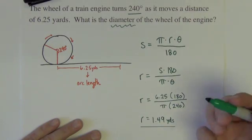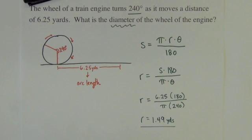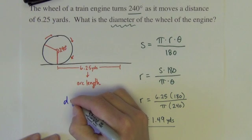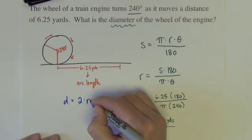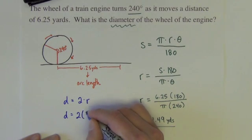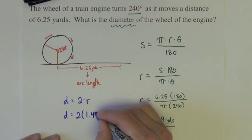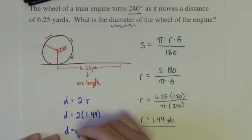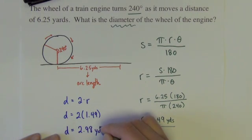Now that's not the answer to the question. The question wants to know what is our diameter. So we know that the diameter is equal to twice the radius. So 2 times 1.49. And our diameter is 2.98 yards.